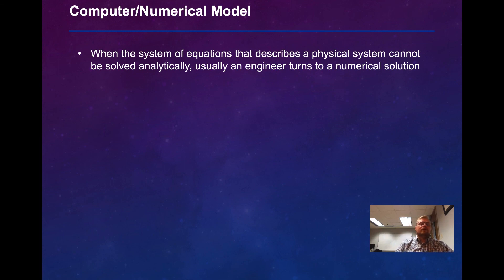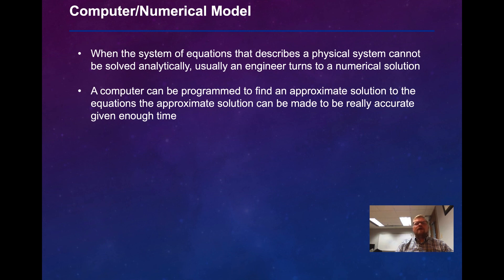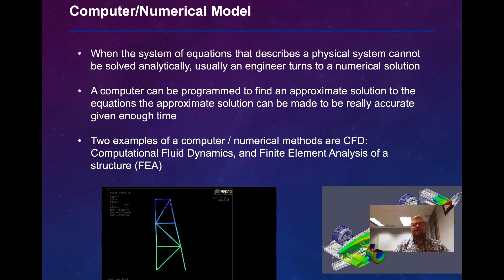Coming back to computer or numerical models, when the system of equations is too difficult to solve by hand, usually an engineer turns to a numerical solution. A computer can be programmed to find an approximate solution to the equations. The approximate solution can be made to be really accurate if you give it enough time. Two examples of computer or numerical methods are computational fluid dynamics and finite element analysis, so CFD and FEA. Programs that we use to do this include things like MATLAB, Python, other coding softwares. There are also specific softwares for specific types of analysis, like ANSYS.